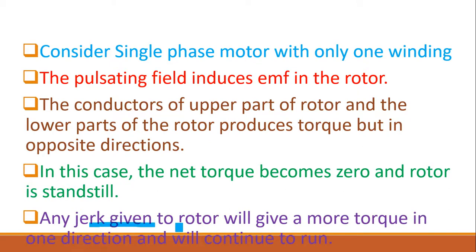However, if you give the motor a jerk — push it in one direction — it will continue to rotate in that direction because it attains a starting torque. You may have seen an old ceiling fan where the capacitor has become weak. It will not start on its own, but if you touch it with a stick or scale, it rotates. This is because it effectively has only one winding due to the weak capacitor, and the mechanical push provides the starting torque.